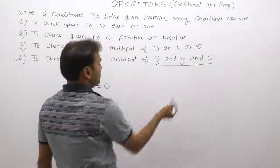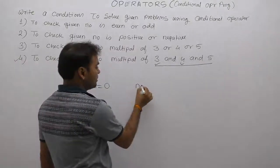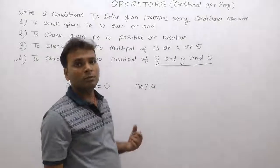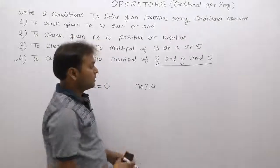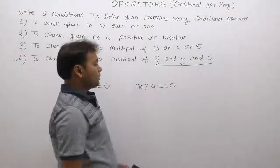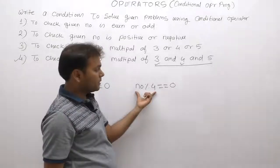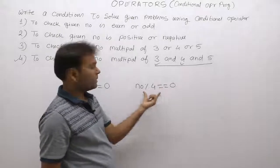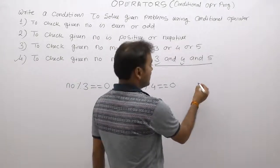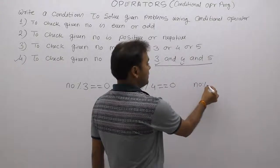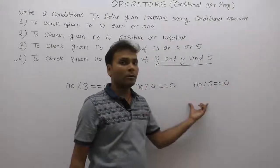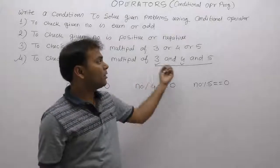For four: number modulo by four — the possible remainders are zero, one, two, three. If remainder is zero, the number is a multiple of four. Same condition applies for five: if number modulo by five gives remainder zero, then the number is a multiple of five. In this case, all three conditions must be true.